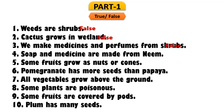Question 4: Soap and medicine are made from neem. Neem is a very useful tree, and we can make soap and medicine from it — that is true. Question 5: Some fruits grow as nuts or cones. It is true; we have seen in the textbook that some fruits grow as nuts or cones. Question 6: Pomegranate has more seeds than the papaya. Yes, it is true. The whole part of the pomegranate that we eat is actually a seed, so it has more seeds than papaya.